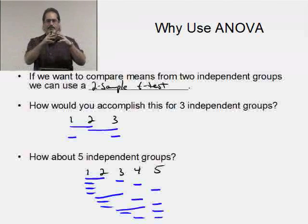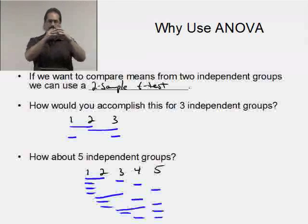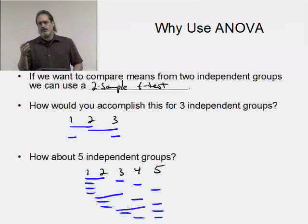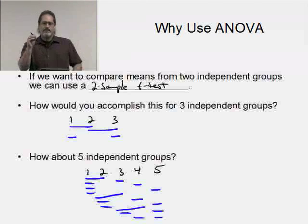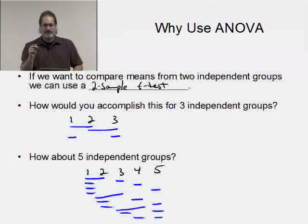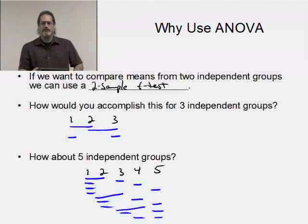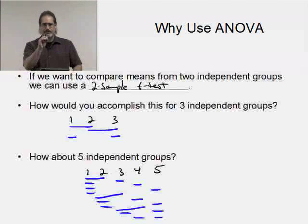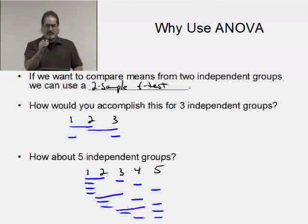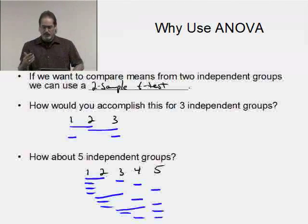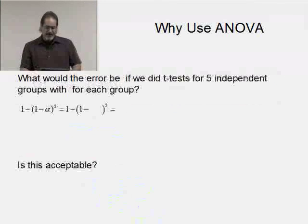That's why we use an ANOVA. ANOVA takes all of them at once, makes a comparison, and says they're all the same or somebody's different. If somebody's different, ANOVA won't tell you which group is different. Then we have to do a multiple comparison test to determine which is different.